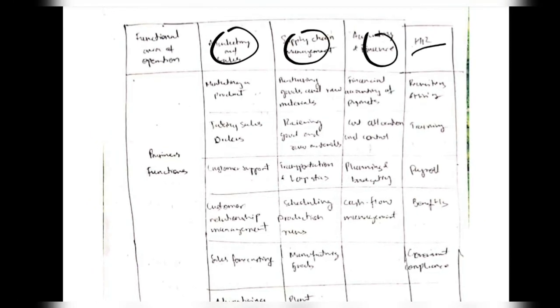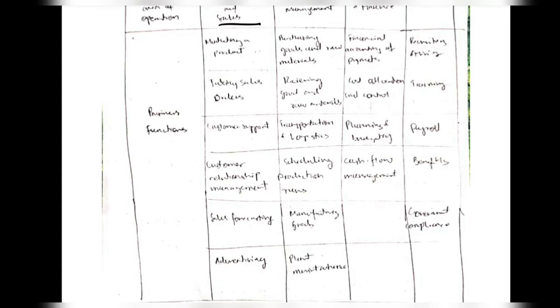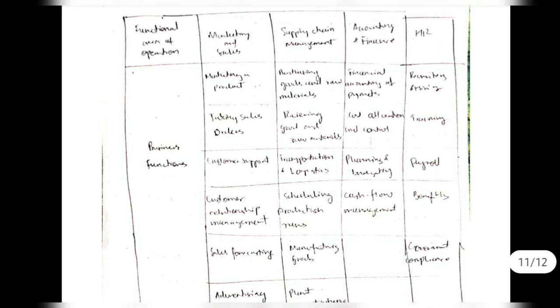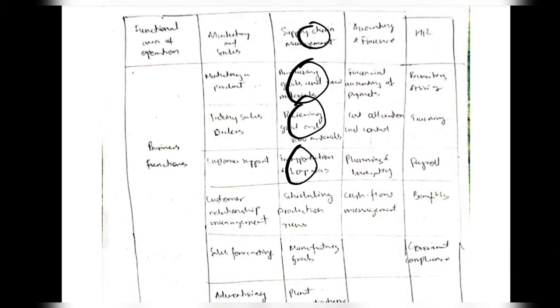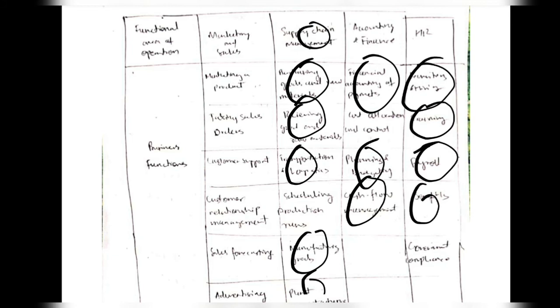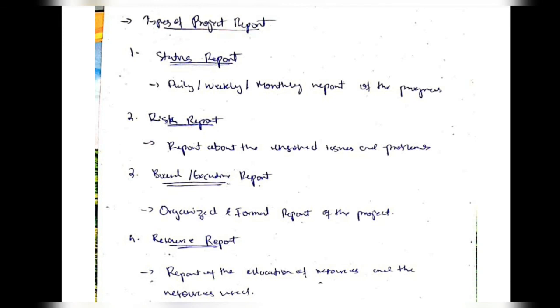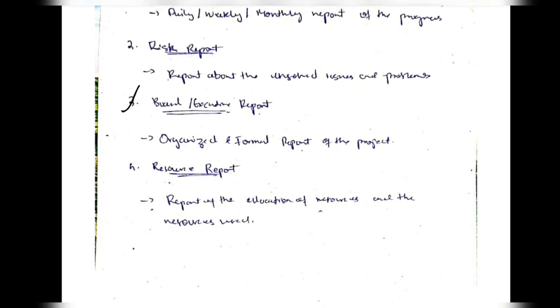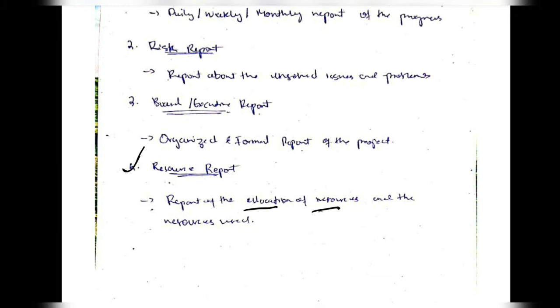There is a table which summarizes what we learned. The four domains are marketing, supply chain, accounting, and HR. For marketing and sales, it starts from marketing a product, taking sales orders, customer support, customer relationship management, sales forecasting, and advertising. For supply chain: purchasing goods, receiving goods, scheduling and manufacturing. For accounting: financial records, planning, and cash flow. For HR: recruitment and training, payroll, benefits, and government compliance. Coming to the types of project reports — there are four: status report, which includes daily, weekly, or monthly progress reports; risk report, which covers unsolved issues and problems; board and executive report, which is a formal organized report about the project; and resource report, which covers allocation of resources and resources used.